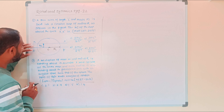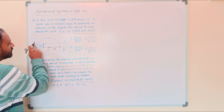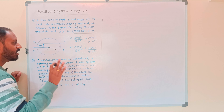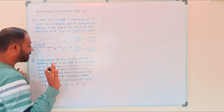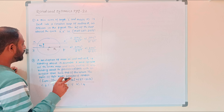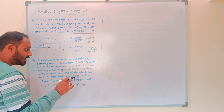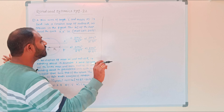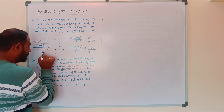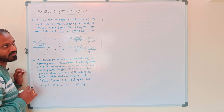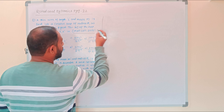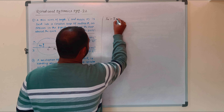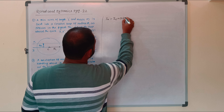We are going to apply the parallel axis theorem to find the moment of inertia about axis XX prime. Using the parallel axis theorem: I = I_c + M h squared.